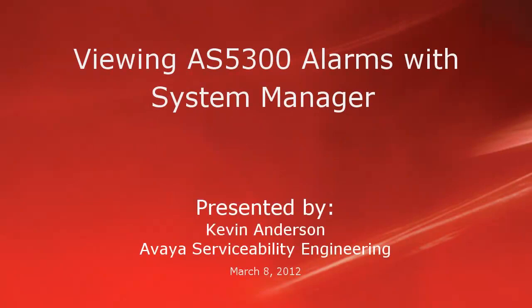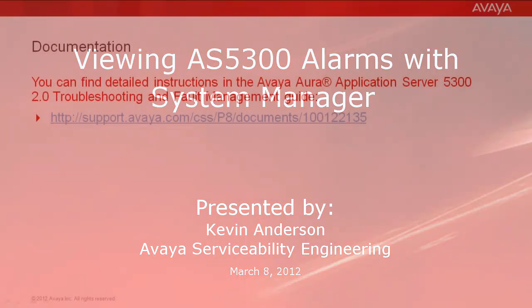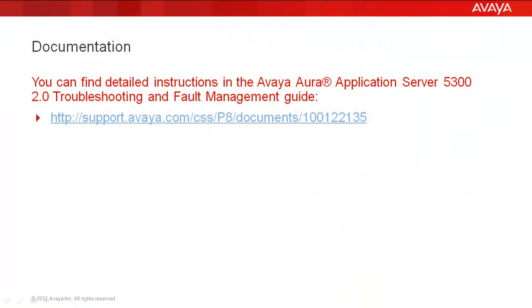Hello, my name is Kevin Anderson with the Avaya Serviceability Engineering team. This video is about using the AS5300 System Manager to view current alarms. Today we will be using the System Manager to view system alarms on network elements. We'll be starting this demo with the System Manager console open. You can find detailed instructions in the Avaya Aura Application Server 5300 2.0 Troubleshooting and Fault Management Guide on the link shown.